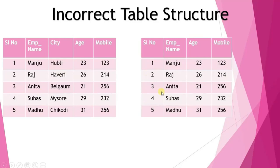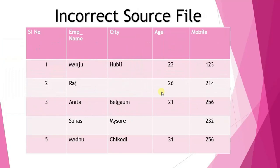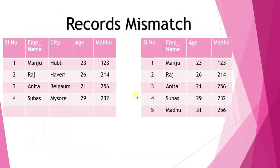Moving to the next slide: incorrect source file. Within the source file we have some data mistakes. In the city column, you can clearly observe that the city for the person Raj is empty. This is what's called a data mismatch, and it happens in the source file.